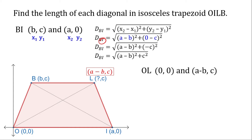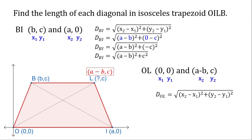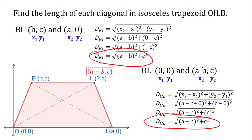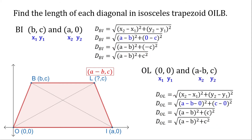Now let's find the length of OL. We have points 0, 0 and A minus B, C. Assigning point 1 and point 2, we write the distance formula and substitute: A minus B minus 0 and C minus 0. Simplifying, we get the same expression as BI. As you can see, both diagonals have the same length, confirming they are congruent.